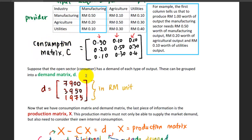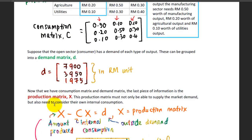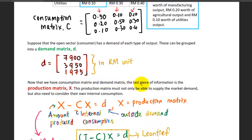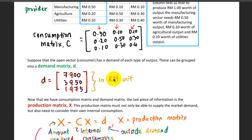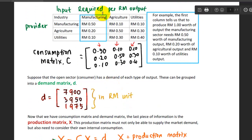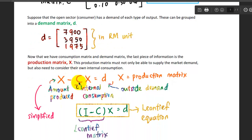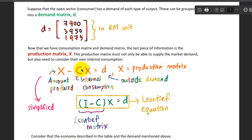You have the consumption matrix, you have the demand. Now what we need is the last piece of information which is the production matrix X. This production matrix must not only be able to supply the market demand but also consider their own internal consumption. Because when you want to produce one ringgit of products from your manufacturing industry, you need to spend some of it for yourself.